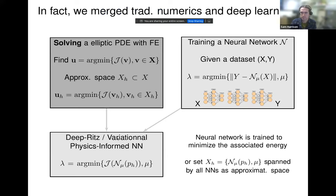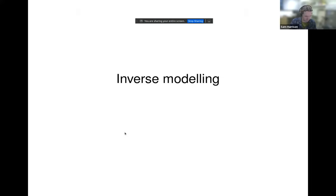This approach can be seen as a merging point between traditional numerics — finite elements — and machine learning. The literature on this is very recent, and terminology varies: some call it Deep Ritz, variational physics-informed neural networks, or simply physics-informed neural networks. All these names refer to related ideas in this emerging intersection of numerical methods and deep learning.